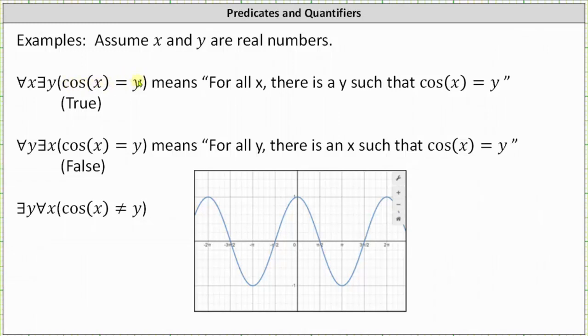...that for every angle inputted into the cosine function, there does exist an output value y, where we know the output of the cosine function will always be on the closed interval from negative one to one, which we can tell from the graph below. This quantified statement is true.